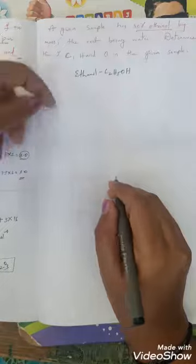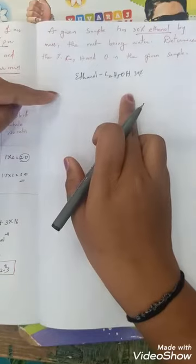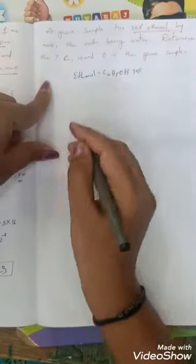For that ethanol, only 30% of ethanol is present and the remaining is water. So in this ethanol we want to determine the percentage of carbon, hydrogen and oxygen.